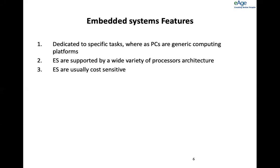I want to write code on top and have my cross compiler take care of generating the respective code for each target. For example, I give an API call like delay_ms(100), and that translates to a 100 millisecond delay whether it's a PowerPC, MIPS, or ARM — I don't care. So we should think about how to write standardized programs across multiple architectures.